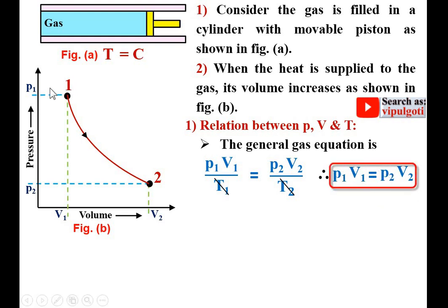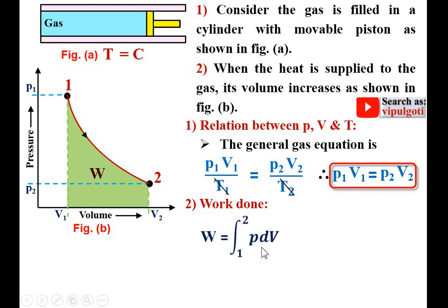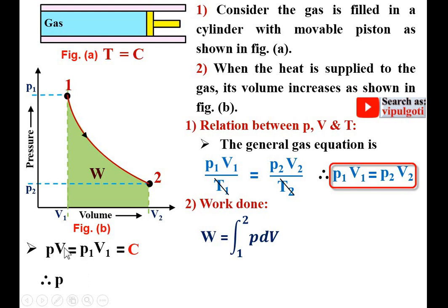For the constant temperature process, the product of pressure and volume is always constant for each and every state. Next, work done — that is the area below this process 1 to 2 on the PV diagram. Work done W = ∫PdV from 1 to 2. Since pressure is also varying, and PV = constant, in general PV = P1V1 = constant. From this, P = P1V1/V, and substituting: W = ∫(P1V1/V)dV, where P1V1 is constant and can be taken outside the integral, leaving ∫(1/V)dV.